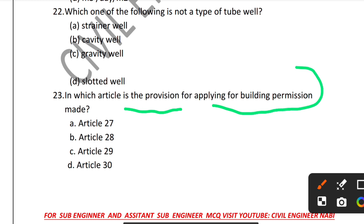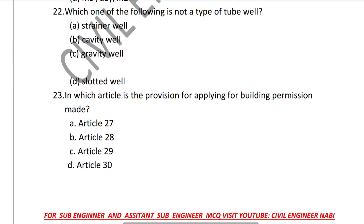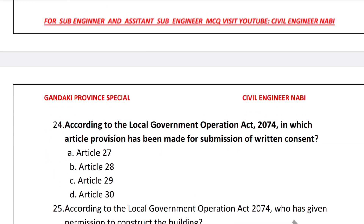Question 23: In which article is the provision for applying for a building permit made? Options are Article 27, 28, 29, or 30. The correct answer is Article 28 — the provision for building permission and construction policy is under Article 28.